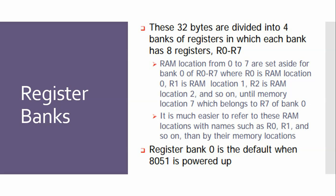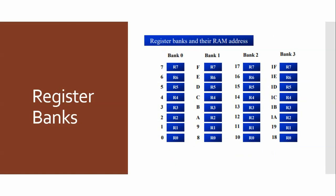It is much easier to refer to these RAM locations by names such as R0, R1, and so on, rather than by their memory addresses. Register bank 0 is the default when the 8051 is powered up, meaning default register bank 0 will be used. Here you can see the register banks and their corresponding RAM addresses.